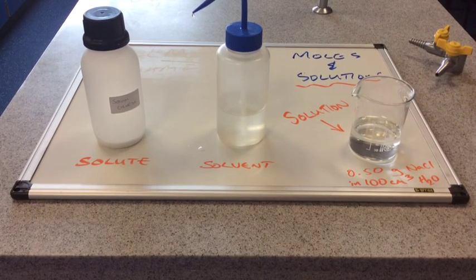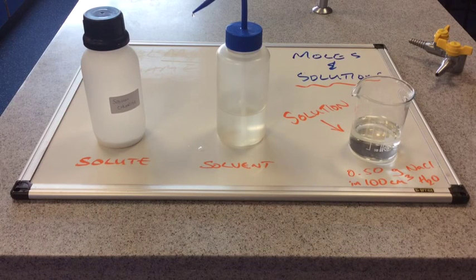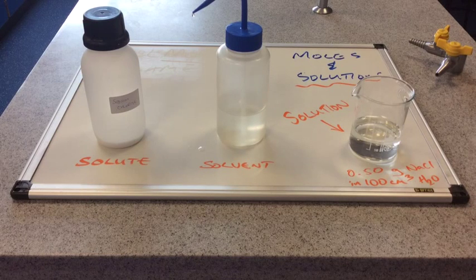What we've made is a solution of sodium chloride — salty water, if you like — and that's going to have a certain strength because we've dissolved some sodium chloride into the water. Chemists don't use the word strength; what chemists use is a term called concentration. We're going to look at how you measure the concentration of a solution.